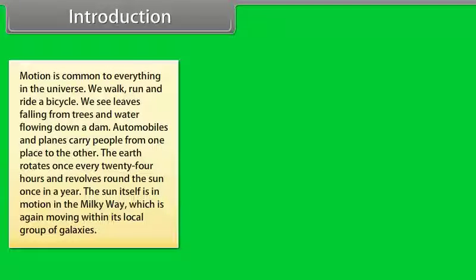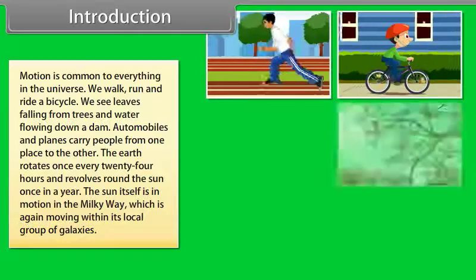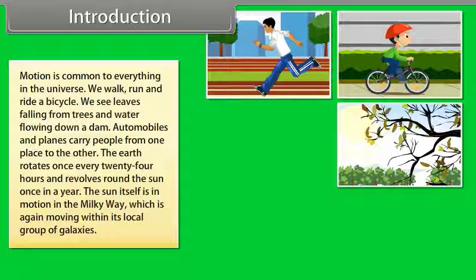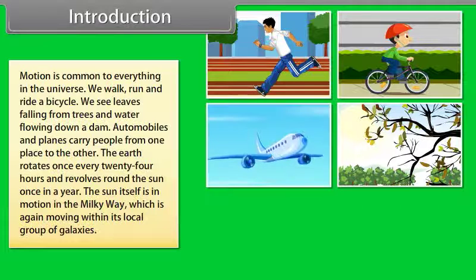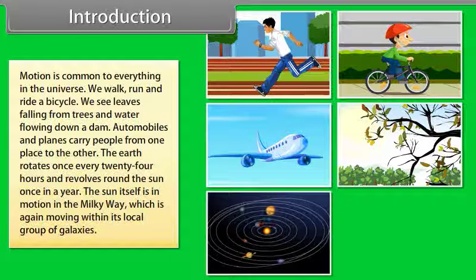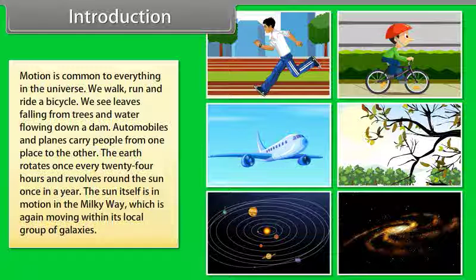Introduction: motion is common to everything in the universe. We walk, run, and ride a bicycle. We see leaves falling from trees and water flowing down a dam. Automobiles and planes carry people from one place to another. The earth rotates once every 24 hours and revolves around the Sun once a year. The Sun itself is in motion in the Milky Way, which is again moving within its local group of galaxies.